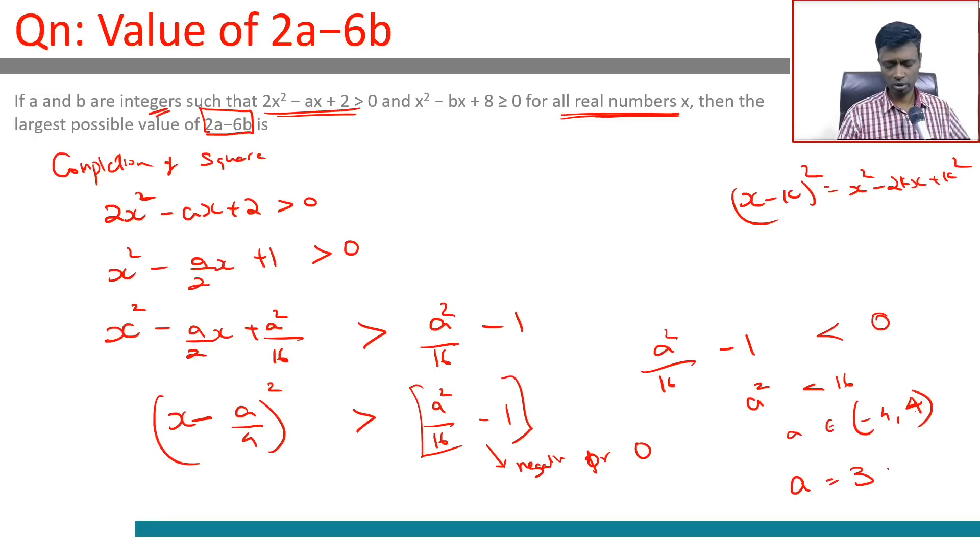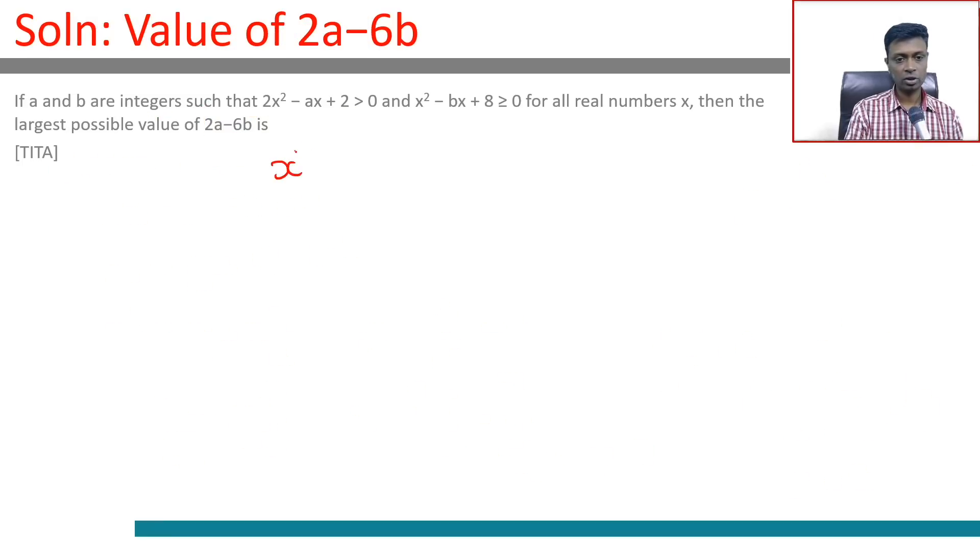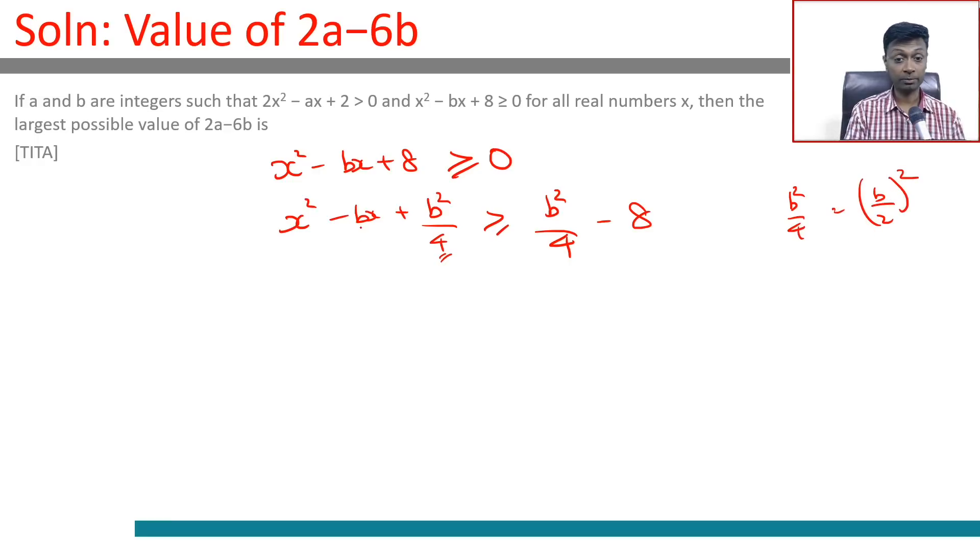Jump in and do the same thing for b. x² - bx + 8 ≥ 0. This is x² - bx + b²/4 ≥ b²/4 - 8. Why are we adding b²/4? b²/4 is (b/2)², and 2 times b/2 is b. So this becomes (x - b/2)² ≥ b²/4 - 32/4.